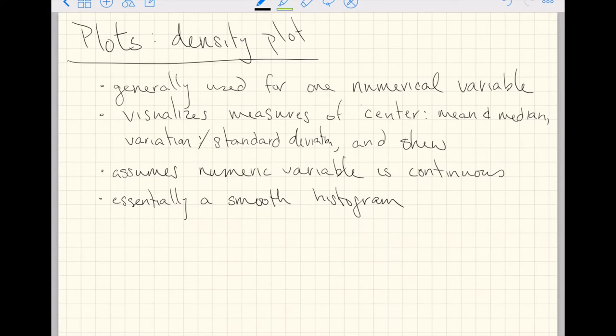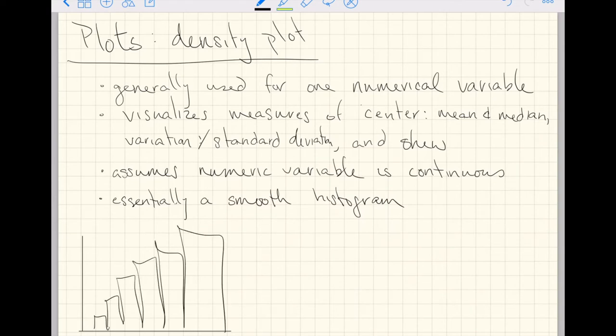The way you should think about a density plot is essentially just a smooth histogram. So let's draw out a histogram. Just because we haven't really had an example of a left skewed histogram, I will give us one right now. Here is a histogram where all the numbers in whatever numeric variable we have have been binned.